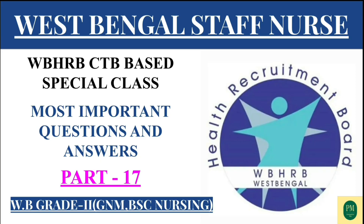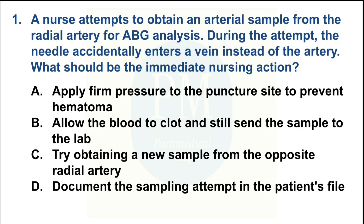The first question: A nurse attempts to obtain an arterial sample from the radial artery for ABG analysis. During the attempt, the needle accidentally enters a vein instead of the artery. What should be the immediate nursing action? Option A: apply firm pressure to the punctured site to prevent hematoma. Option B: allow the blood to clot and still send the sample to the lab. Option C: try obtaining a new sample from the opposite radial artery. Option D: document the sampling attempt in the patient file. The correct option is Option A — apply firm pressure to the puncture site to prevent hematoma.